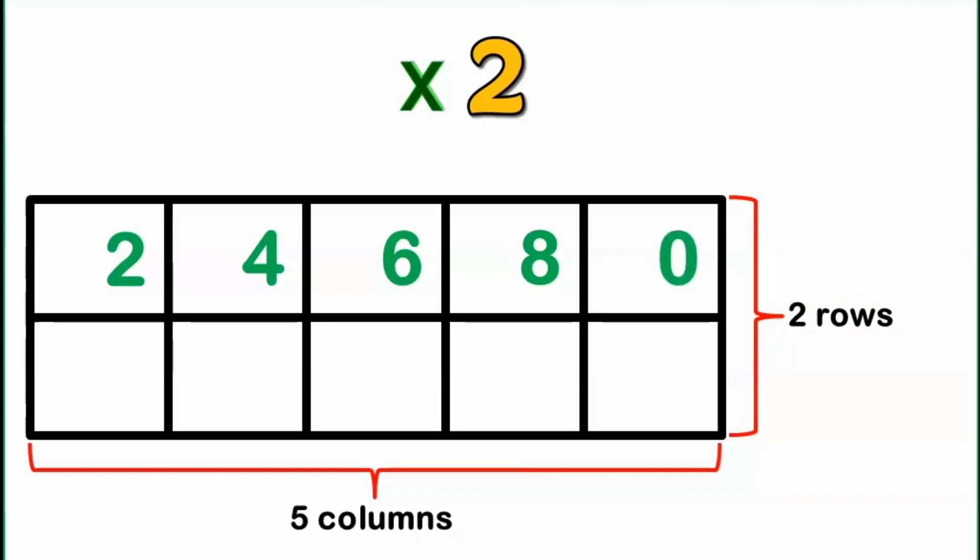The same for the second row. We have 2, 4, 6, 8, and 0.